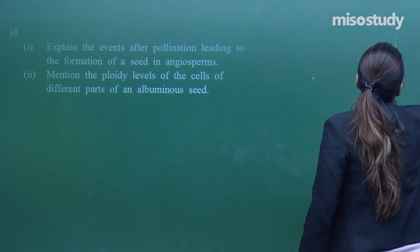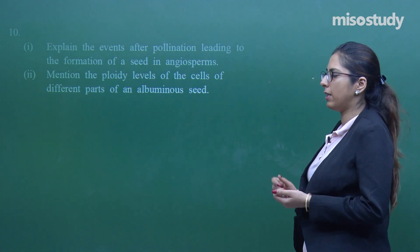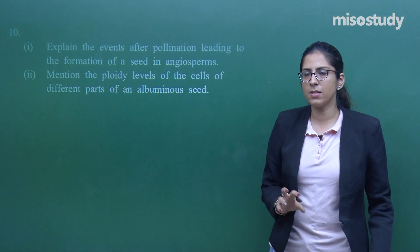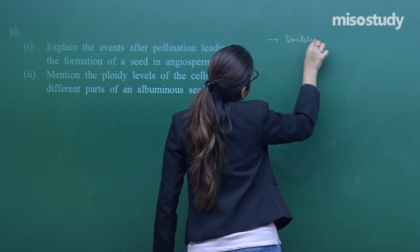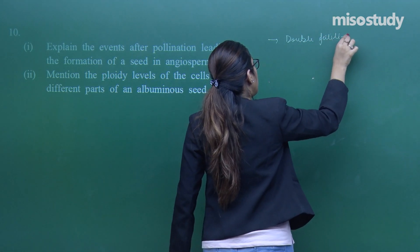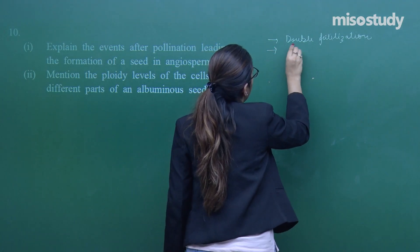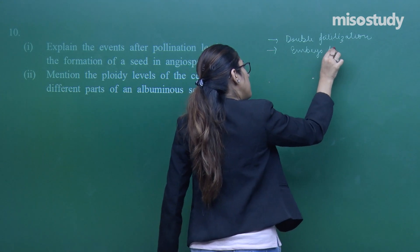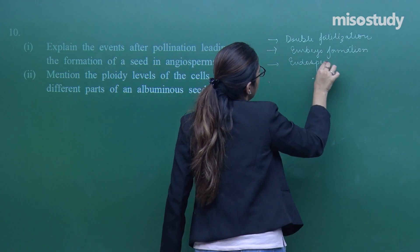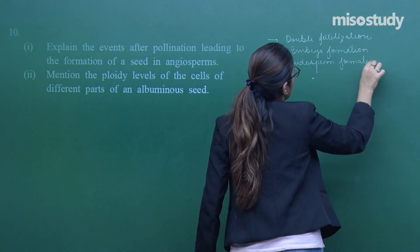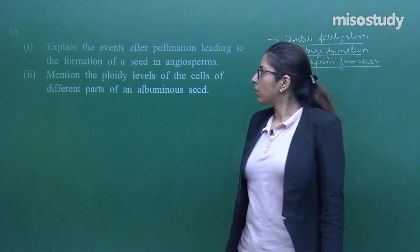Question number 10: 'Explain the events after pollination for the formation of a seed in angiosperm and mention the ploidy level.' First, you need to explain how double fertilization happens — this is a very important step. Second, explain embryo formation. Third, explain endosperm formation. All these processes should be explained with neat and clean diagrams.